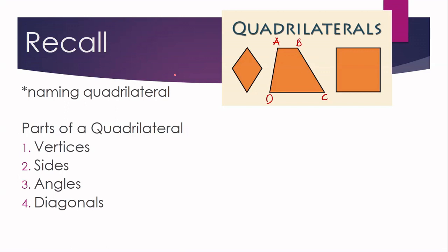The different parts of a quadrilateral are as follows: we have the vertices, the sides, the angles, and the diagonals.